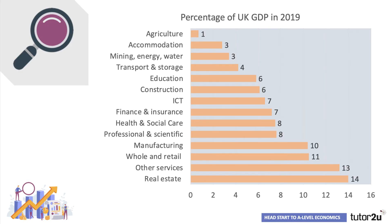Manufacturing and construction together provide 16% of GDP. All of the remaining sectors are essentially public and private sector services — education, healthcare, retailing, transport and storage, etc. Together, services account for around 80% of the national output of the UK economy.